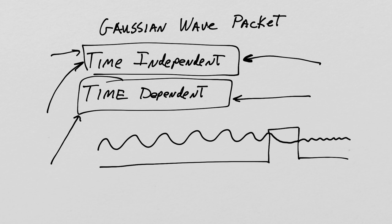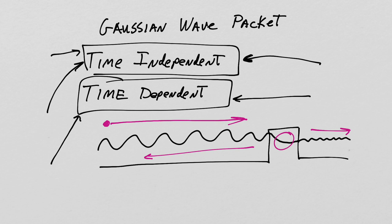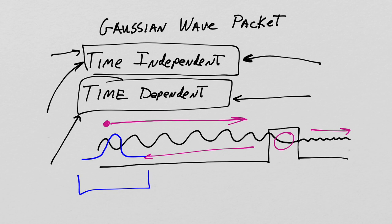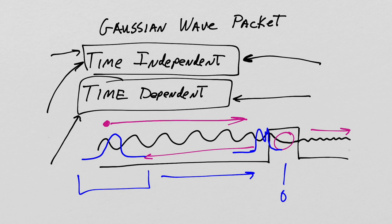This stationary state represents something happening for all time and doesn't really reflect the idea of a quantum mechanical particle heading toward a potential, interacting with it, and then being discovered either reflected or transmitted. The time-dependent formalism solves that problem: instead of an incident sine wave, you have a Gaussian or localized wave packet located far out at large negative times, approaching the center of the system.